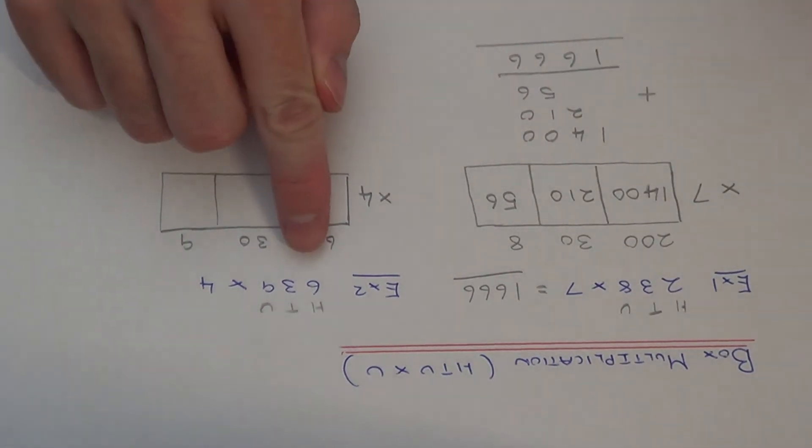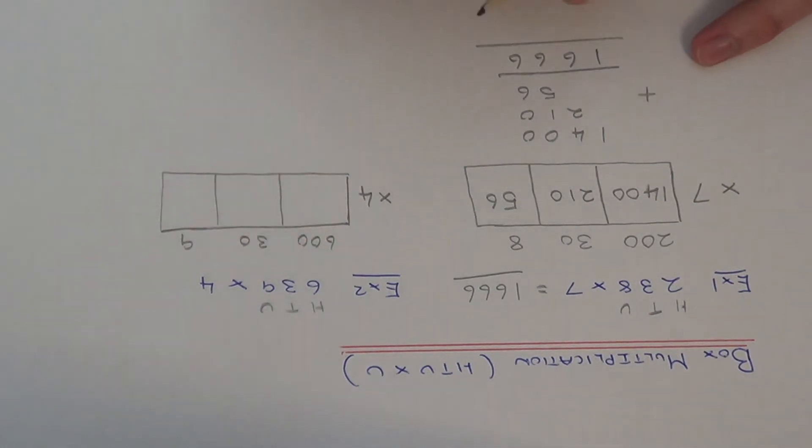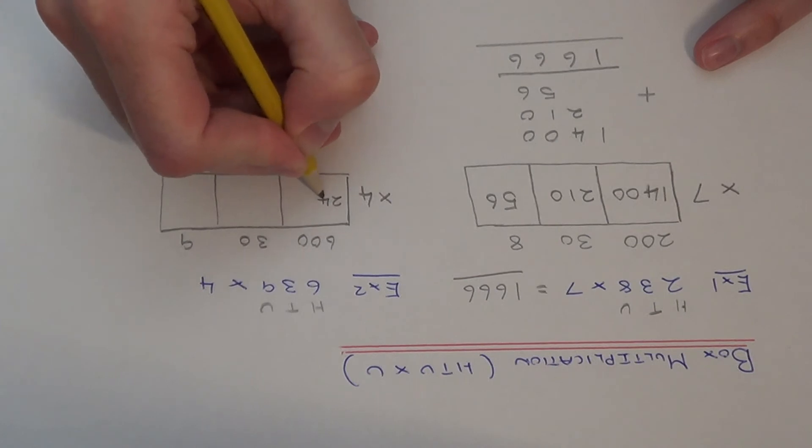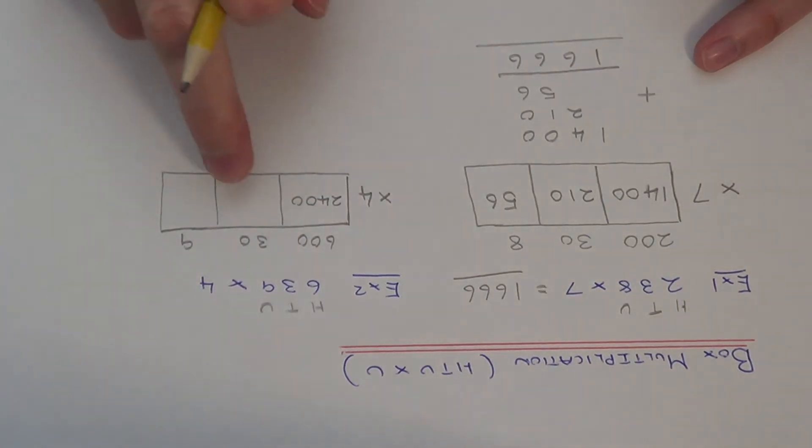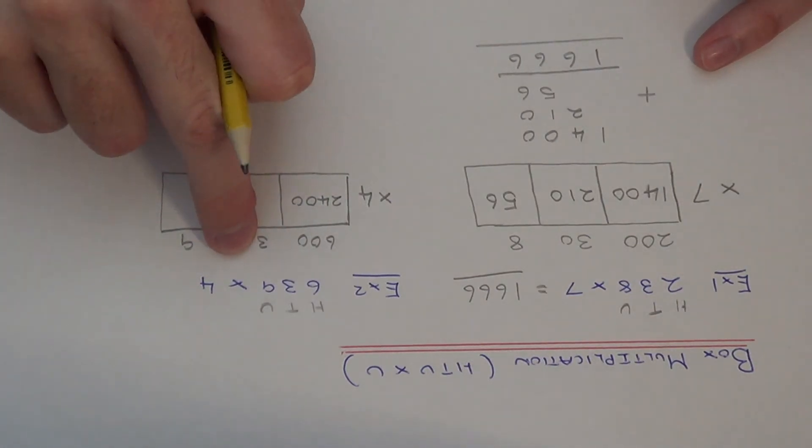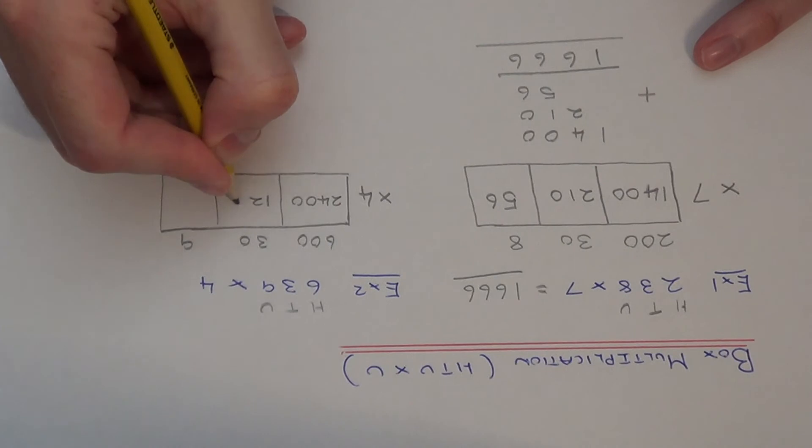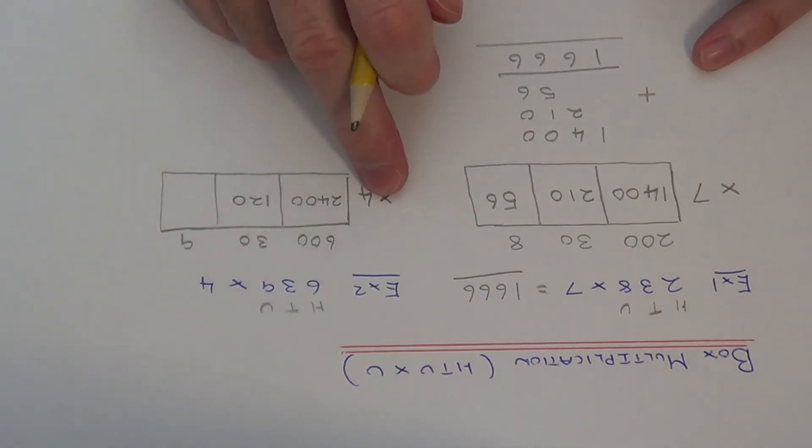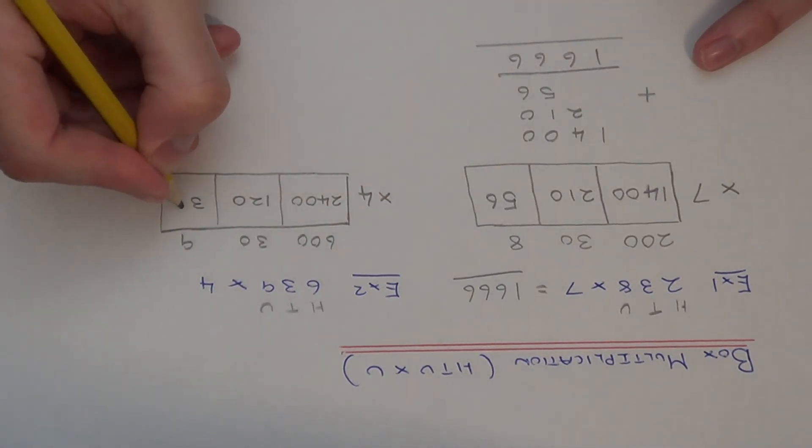Again we can cover up the zeros to make things easier. What's 6 times 4? That's 24. Then add the two zeros back on. In our next box we've got 30 times 4, so just work out 3 times 4, that's 12 plus 0. In our final box we've got 9 times 4 which is 36.